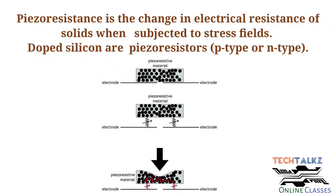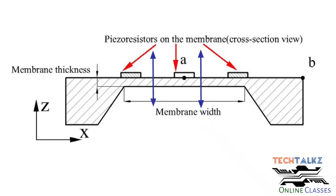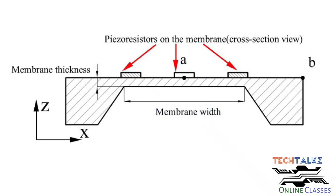Piezo resistors are used in micro-sensors and micro-actuators. For example, in a micro-pressure sensor, liquid pressure is applied to a diaphragm, and piezo resistors are placed on the diaphragm to sense the resulting stress field.